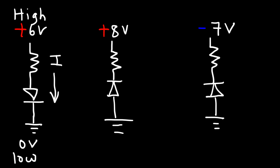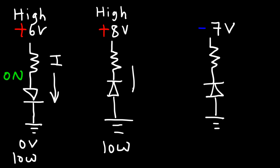For the second situation with 8 volts, current will still flow from a high potential to a low potential in the same direction. However, notice that it is opposite to the arrow symbol in the diode, so therefore this circuit will be off — no appreciable current is flowing.